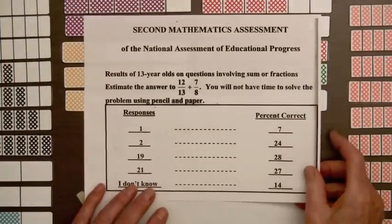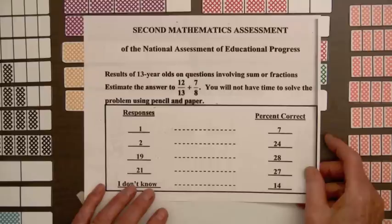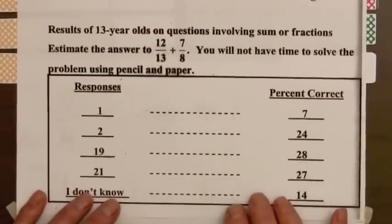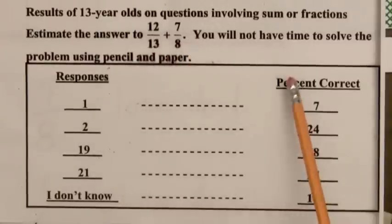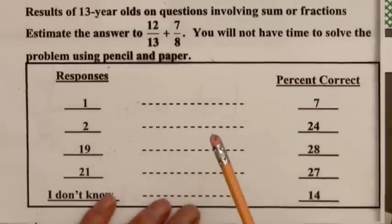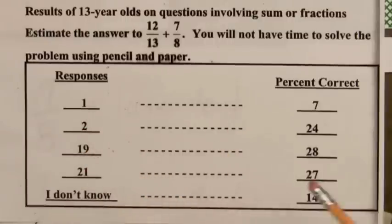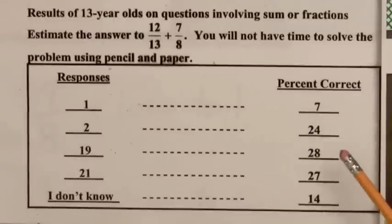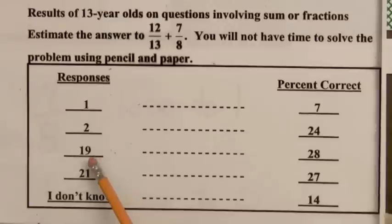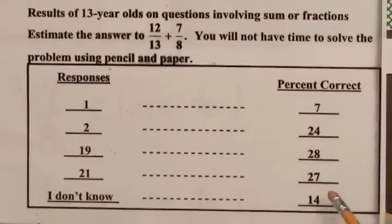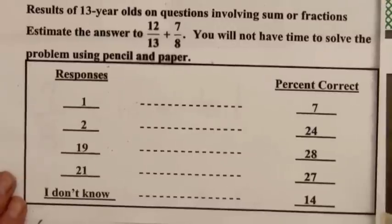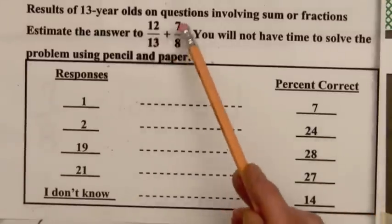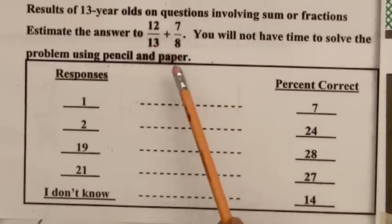Let's look at the results of the National Assessment of Educational Progress. This test was given to thirteen-year-old students. They were asked to estimate the answer to twelve over thirteen plus seven over eight, and would not have time to solve the problem exactly. The responses were one, two, nineteen, twenty-one, and 'I don't know.' Twenty-eight percent said the sum is approximately nineteen — they got that by adding the two numerators. Twenty-seven percent said twenty-one, which they obtained by adding the denominators. So over fifty percent of these students seemed to have no feeling or understanding of what these fractions mean.